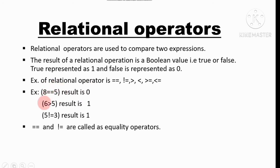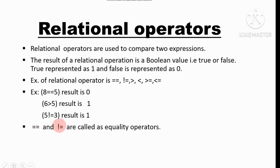Next, 6 > 5 — this expression is true, so the result is one. Next, 5 != 3 — this expression is also true because five is not equal to three, so the result is one. The == and != operators are called equality operators because they compare whether your expressions are equal or not.